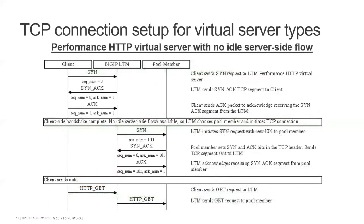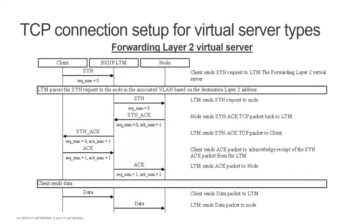This is the same but without any server-side flow being idle. So SYN-ACK, we open with the server side to the pool member SYN-ACK, and then we receive the GET request from the client and forward it straight away. This is a layer two virtual server — we receive the SYN from the client and will pass the SYN to the nodes in the associated VLAN based only on the layer two MAC address. We send the SYN preserving the IP packet and IP addressing, only changing the layer two addressing. We receive the SYN back, save the ACK, and send the data.